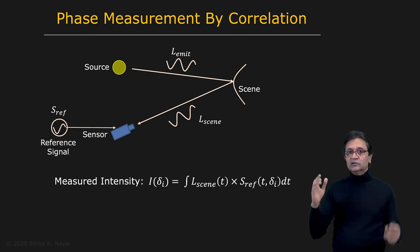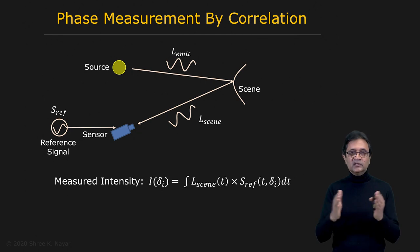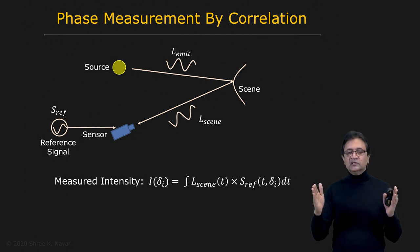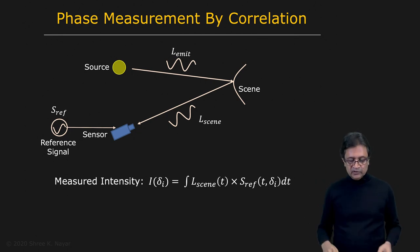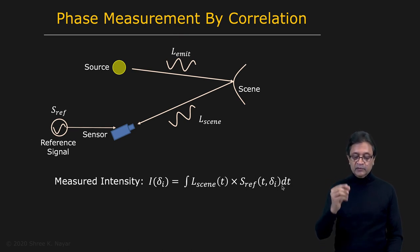The measured intensity by this pixel, after you've done this correlation over some substantial period of time—maybe 30 milliseconds, substantial compared to the frequency of modulation—once you've multiplied the incoming light with the reference signal and integrated over the integration time, you get a measurement i for the reference signal phase δ_i.